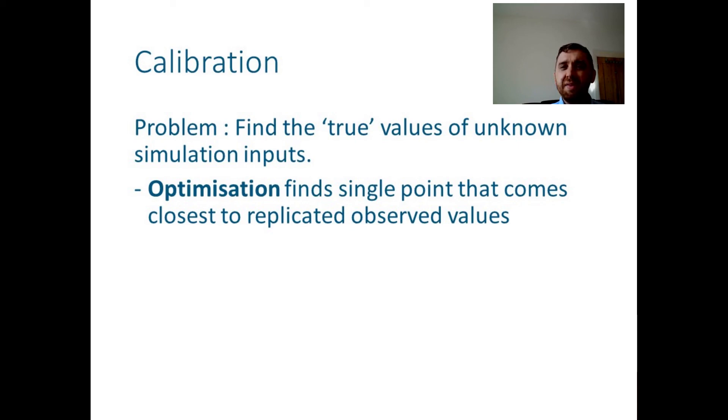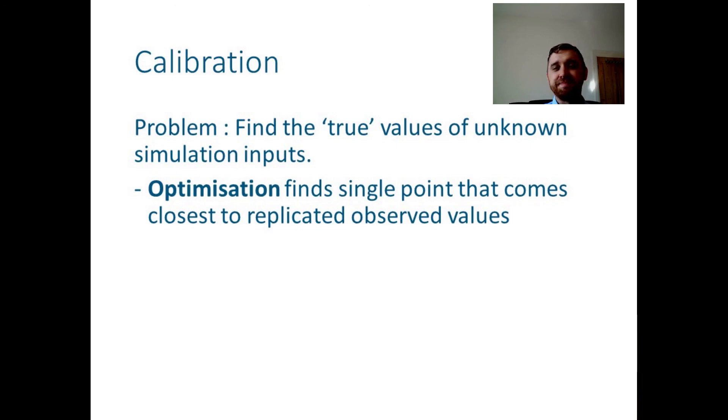However, given the list of uncertainties we discussed earlier, we are unlikely to know enough about our system to be confident that such an optimal value is the true one. Relying on such an optimal value may lead us to draw incorrect conclusions about our simulations. Probabilistic calibration methods instead aim to account for all sources of uncertainty, and identify a set of input values that could have generated the values we observe, protecting us against our overconfidence.